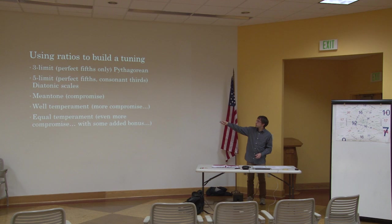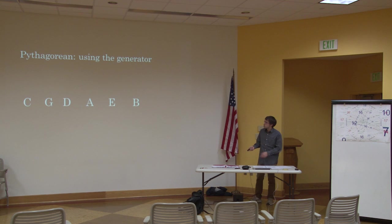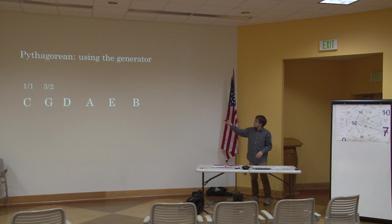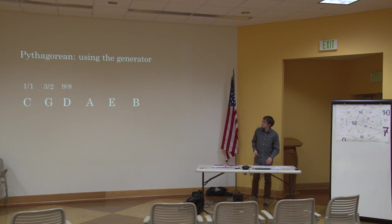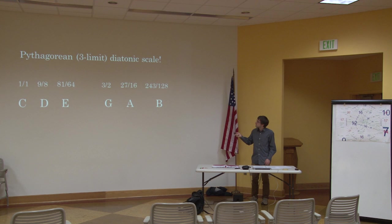What happens when temperament actually occurs is we start compromising between 3 and 5. The ten in 10/9 has a 5 in it — 5 times 2 is 10 on top. Nine is made of threes, and 9/8 is the three-limit interval. So some of these intervals are three-limit or Pythagorean, and some are five-limit. We are making a compromise between Pythagorean and the new five-limit system when we introduce mean tone.